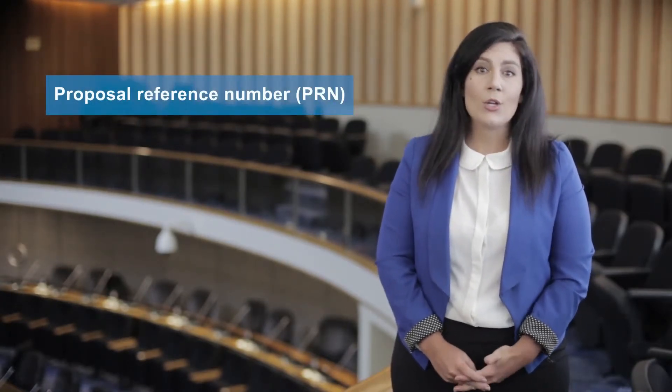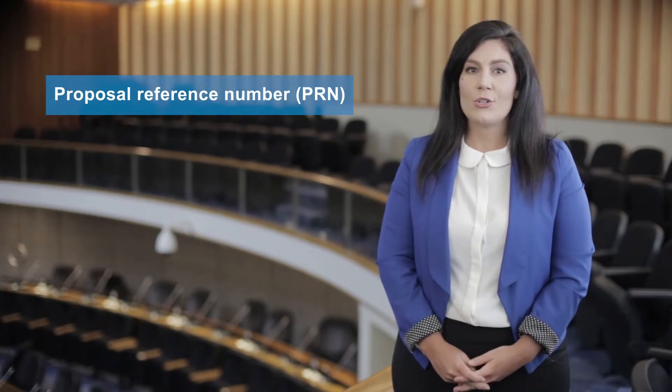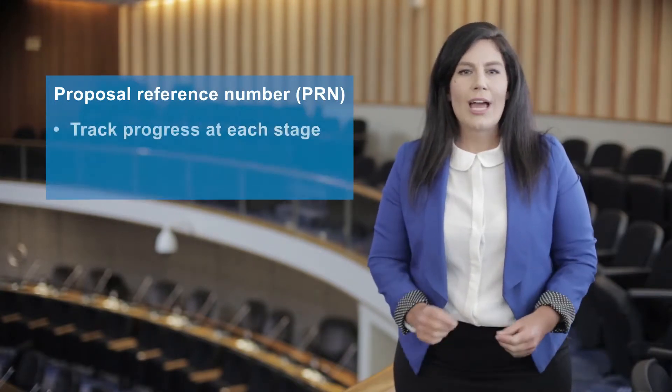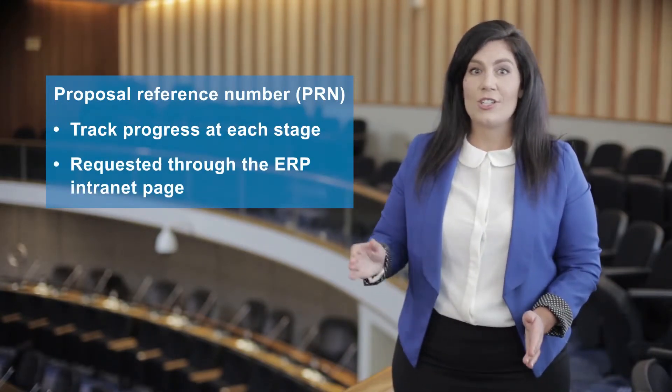Before delving any deeper, may we remind that ERP should be informed as early as possible about a prospective engagement with a donor, primarily so that due diligence can be carried out, particularly if the agreement involves a new donor. Also so that a unique proposal reference number, or PRN, could be issued. This is used to help track the progress at each of the stages.